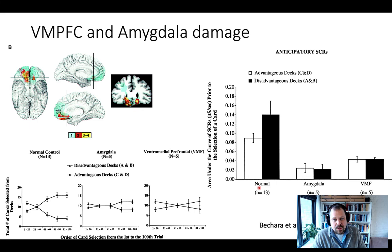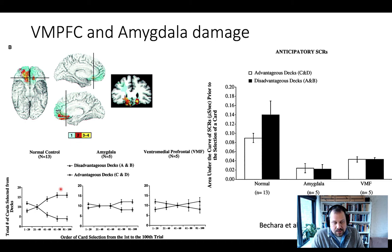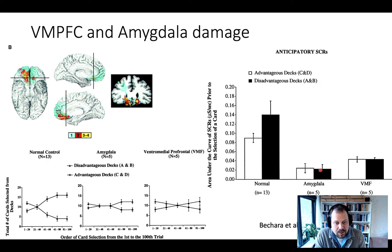Skin conductance responses while selecting a card showed that normal controls were a little nervous when taking cards from disadvantageous decks — indicating they had implicitly learned, perhaps explicitly toward the end, that this might lead to a large loss. This was not the case for amygdala or VMPFC patients. This evidence has been used to support the somatic marker hypothesis, proposed by Beccara and Damasio.